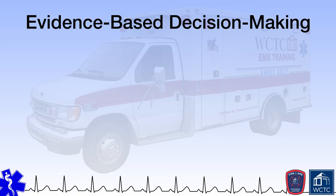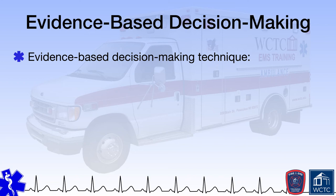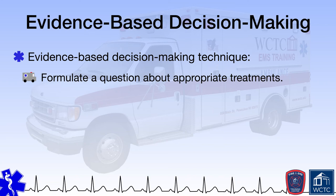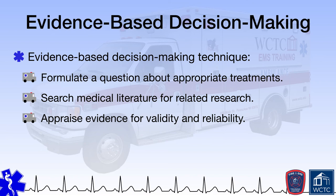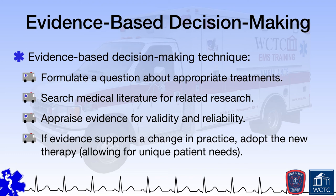Even with these pressing challenges in mind, EMS must continue to make efforts to perform research and utilize evidence-based decision-making to move the profession forward for the benefit of the patients we serve. The steps are relatively straightforward: the researcher must formulate a question about appropriate or inappropriate treatments, then conduct a literature review to see if related research already exists, and such evidence must be appraised for validity and reliability. If such evidence does not exist, then the researcher may have to conduct a research project to obtain the data. Regardless of where the data comes from, so long as the data is valid, reliable, and supports a change in practice, the agency should then adopt the new treatment, practice, or therapy while keeping unique patient needs in mind. That, in a nutshell, is how evidence-based decision-making should work within EMS.